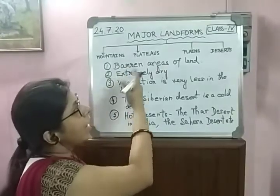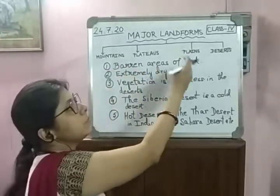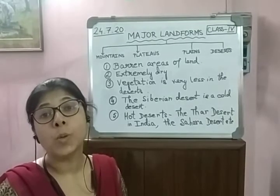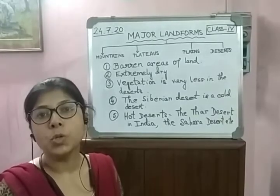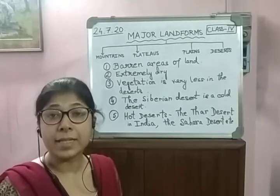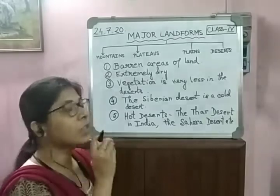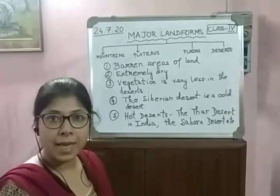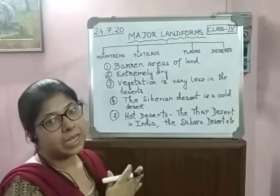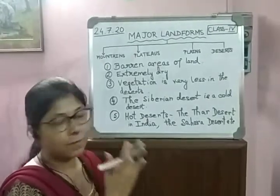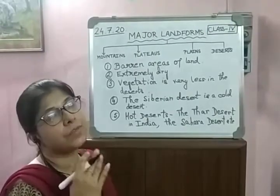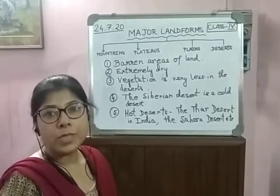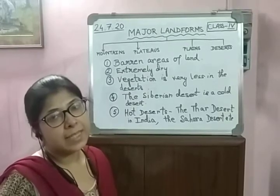Now we have done all the various types of landforms — mountains, plateaus, plains, and deserts. Till here is the chapter. In the next class we will do another chapter. For this class, you will go through the whole chapter for a clear understanding, and you will do the worksheet on deserts in the SST 2 interleaf copy. Learn all the various types of landforms and their characteristics. Stay safe at home, use a hand sanitizer and mask every time. Stay fit and healthy. Thank you.